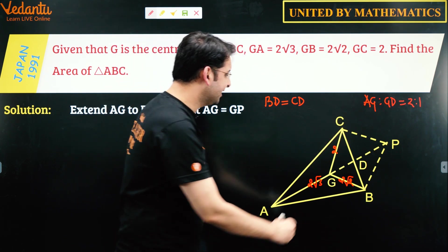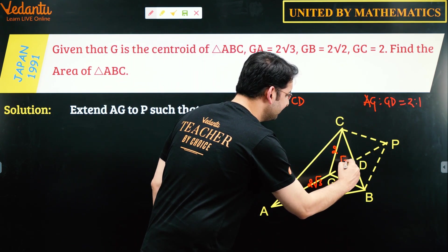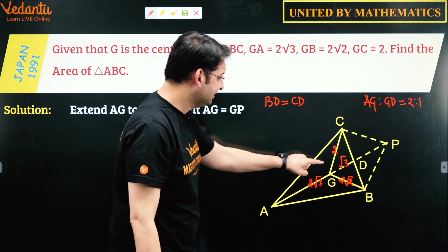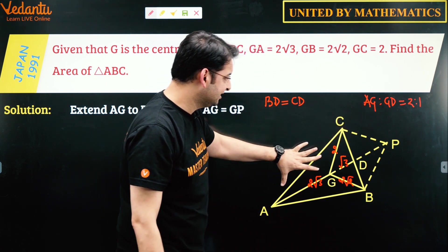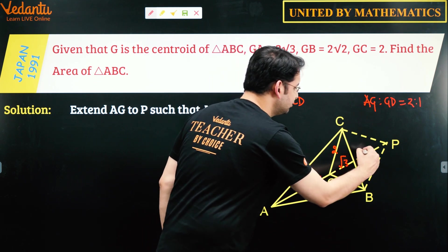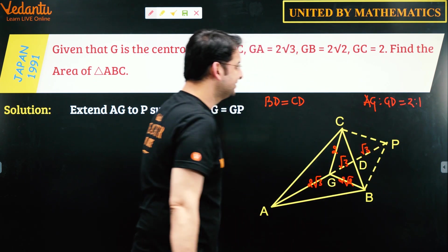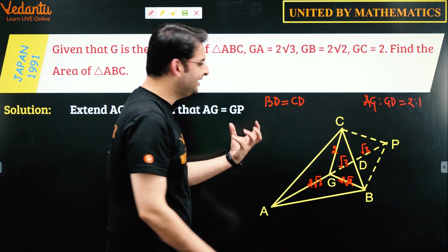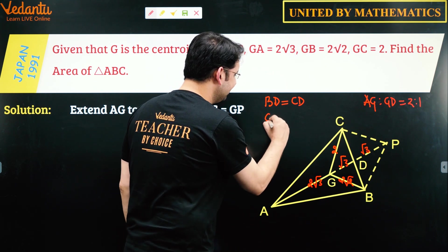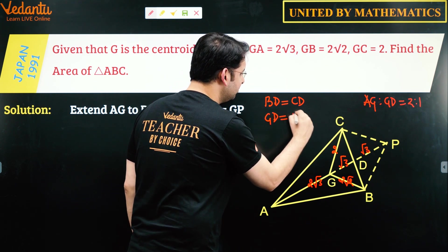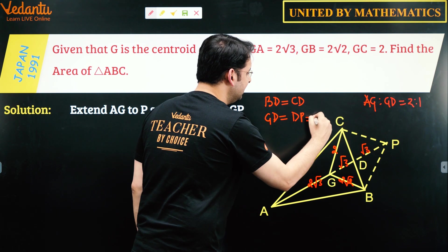So if this is 2 is to 1, can I say GD would be √3, and likewise since AG is equal to GP and this is 2√3, DP has to be √3. So what does this tell us? This tells us that GD is also equal to DP because they are both equal to √3.